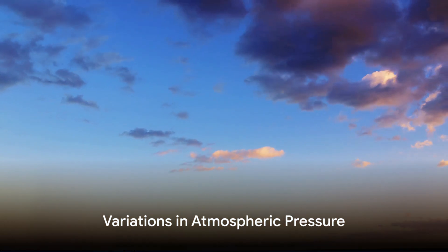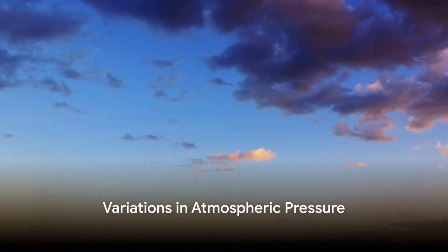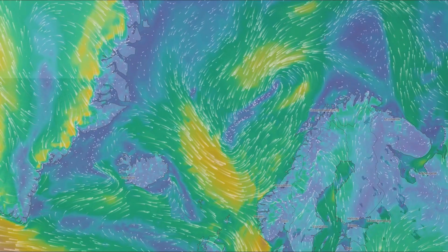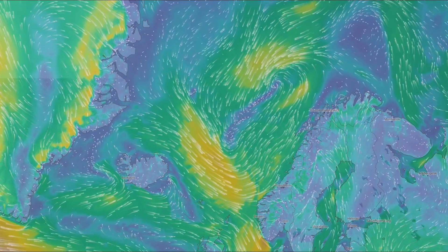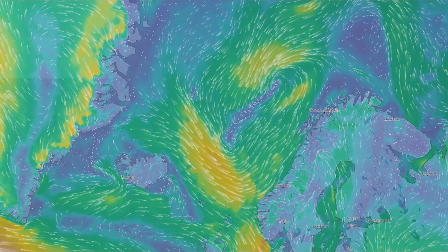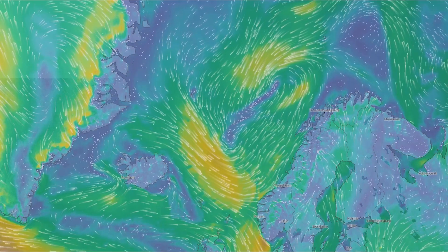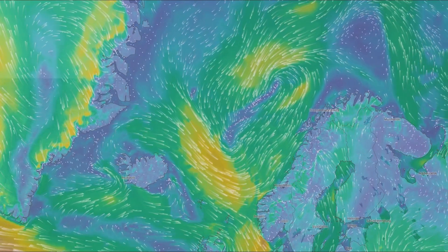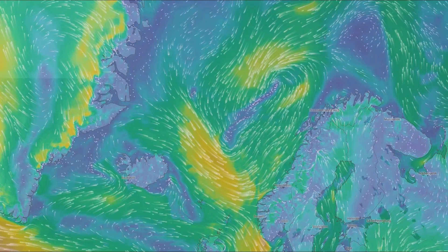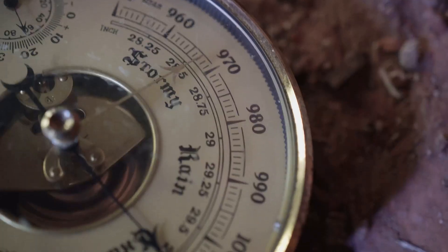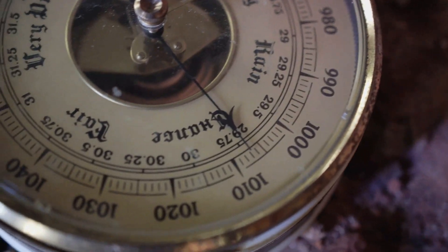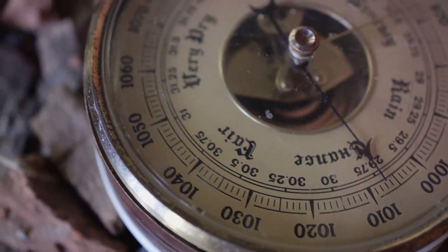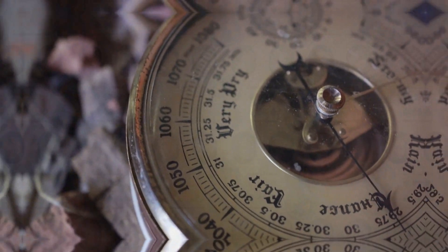Atmospheric pressure varies diurnally, seasonally, and with altitude. Daily variations can range up to 3 MB in the tropics, while seasonal fluctuations are more pronounced on continents and oceans. We'll also discuss the barometric lapse rate, which shows how pressure decreases with altitude.